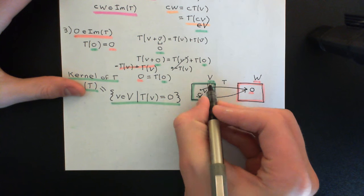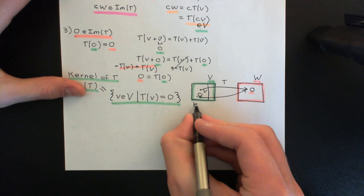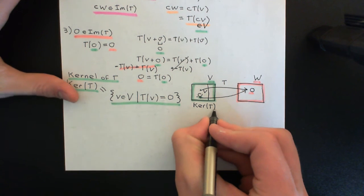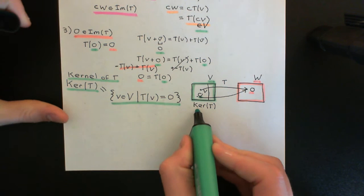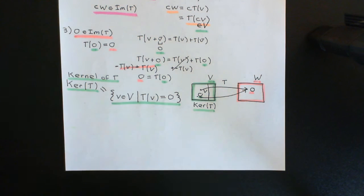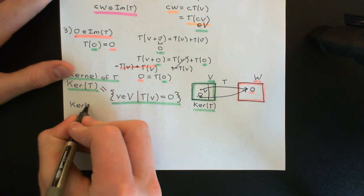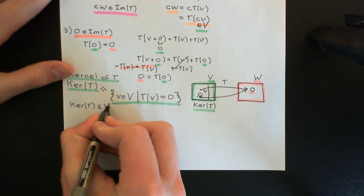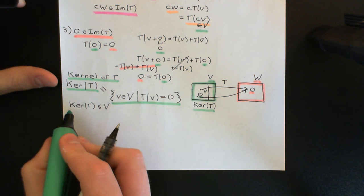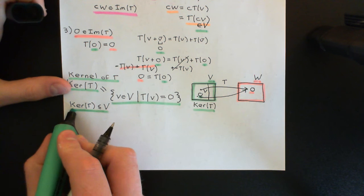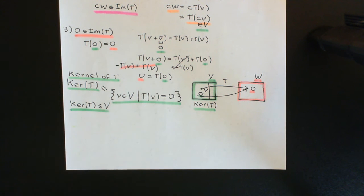So the kernel is a subset of the domain vector space — all the elements of the domain vector space which are being mapped onto the zero vector in the codomain vector space. What we want to prove now is that this is actually an interesting subset because it is always a subspace. The next thing to prove is that the kernel of a linear transformation is always a subspace of the domain vector space capital V. We need to go through the same three criteria we used for the image of T, but now in the domain vector space.